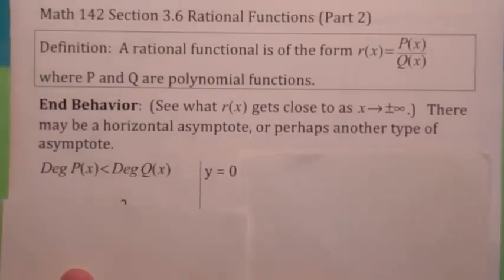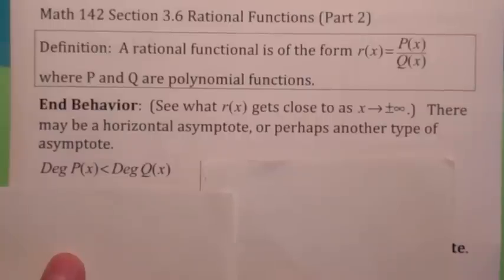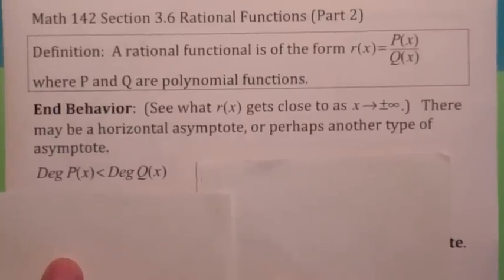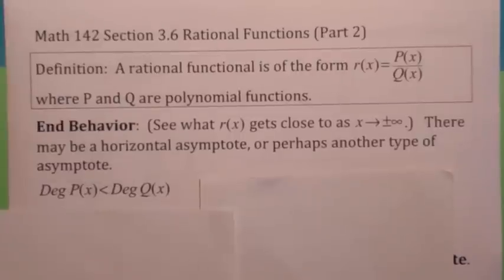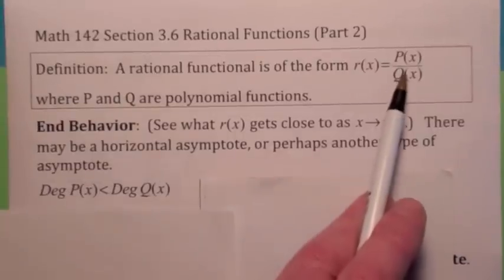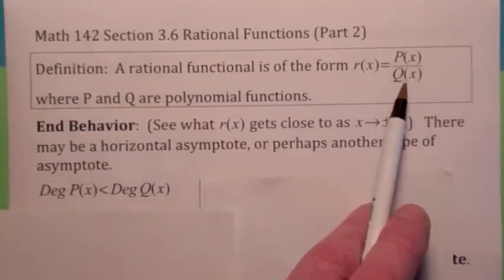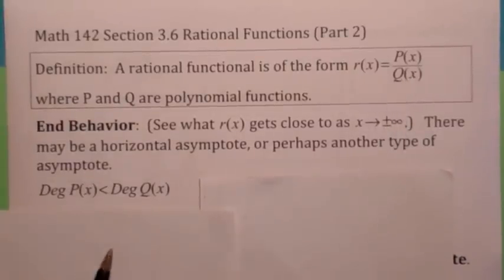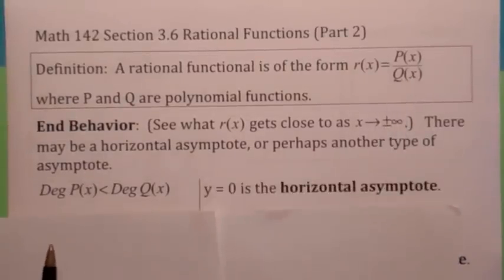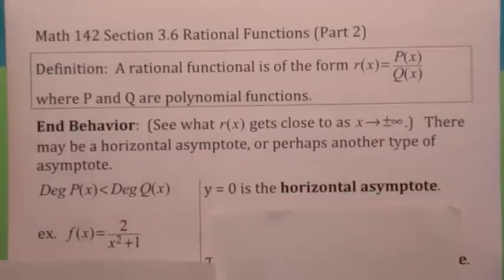It all depends on the relative size of the degree. If the degree of the numerator is less than the degree of the denominator, it turns out you'll always have y equals zero as the horizontal asymptote.